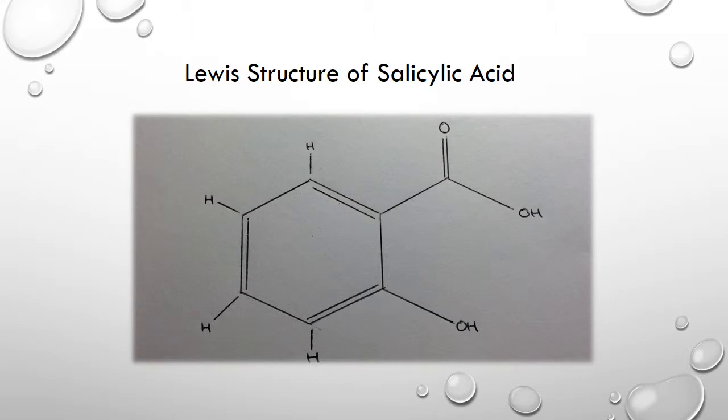This molecule is constructed primarily of carbon, which forms covalent bonding with hydrogen and oxygen. It is noted that salicylic acid itself is a benzene ring having a hydroxy group and a carboxyl group bonding to adjacent carbon atoms.